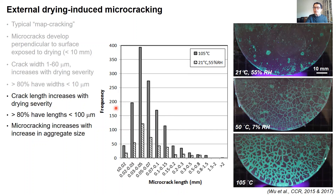Another important feature we observed was that increasing aggregate size — increasing the size of rigid inclusions at a constant volume — increases the amount of shrinkage and therefore the degree of microcracking, which is very consistent with what was observed in other studies.